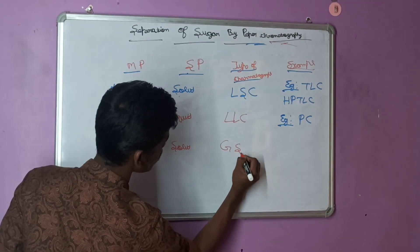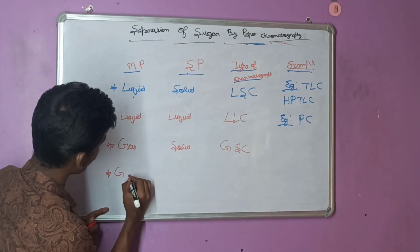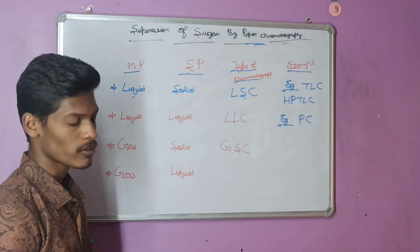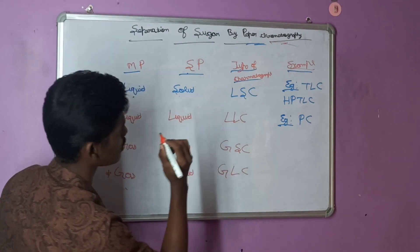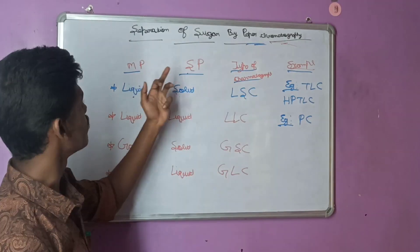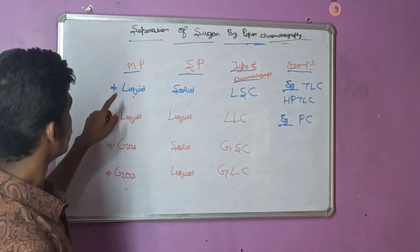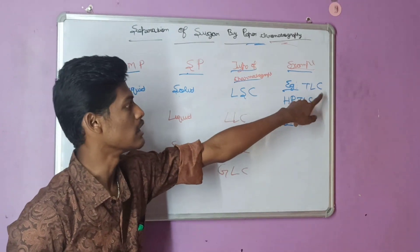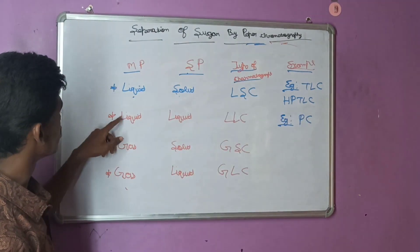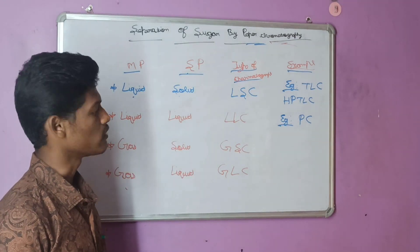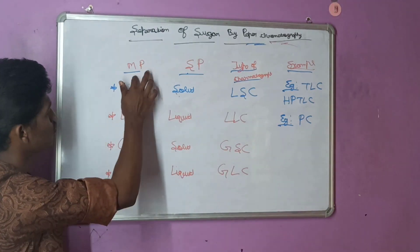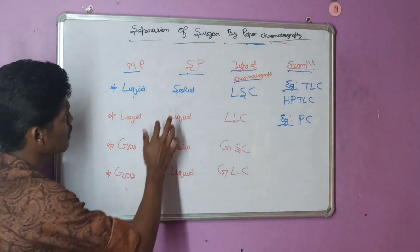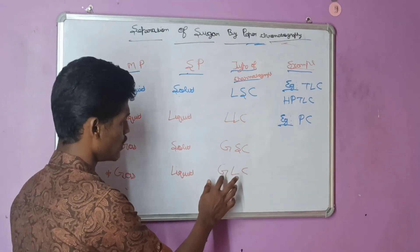Third condition: if the mobile phase is gas and stationary phase is solid, we call this type of chromatography as gas-solid chromatography. Fourth condition: if the mobile phase is gas and stationary phase is liquid, we call this type of chromatography as gas-liquid chromatography. So, based on mobile phase and stationary phase, chromatography is divided into four types.